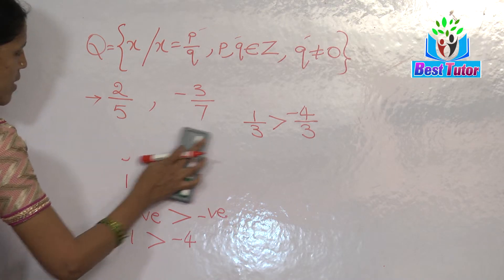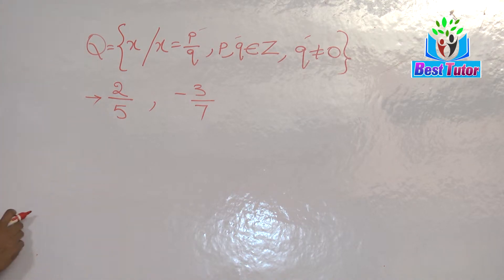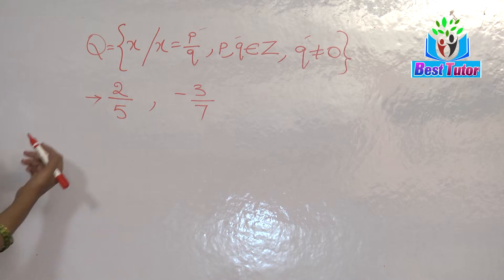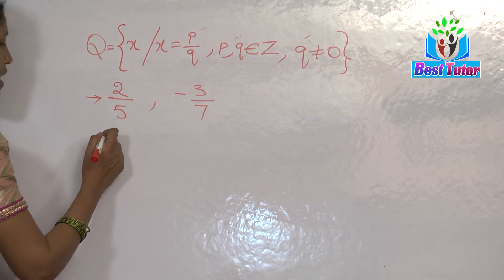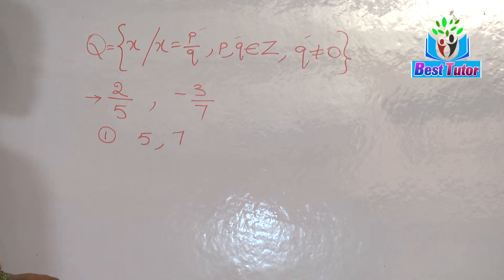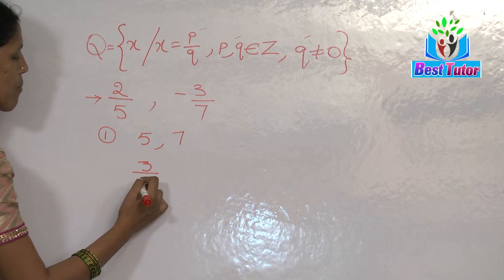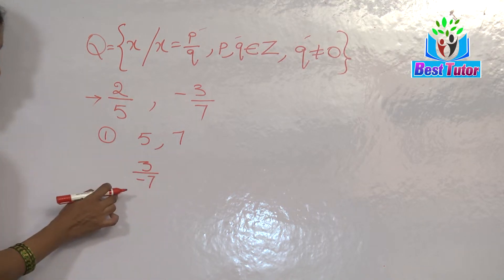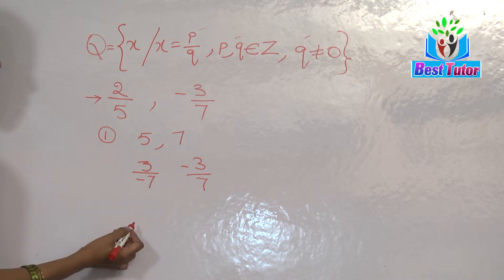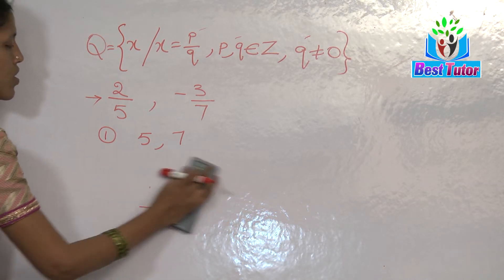Now let us get back to the example of two by five and minus three by seven. These two are unlike fractions. Remember that the negative sign is always carried with the numerator. Even if we write three by minus seven, that negative belongs to the entire fraction — not specifically to the denominator. Whether we write minus three by seven or three by minus seven, the entire fraction is negative, irrespective of whether the numerator or denominator carries the negative sign.